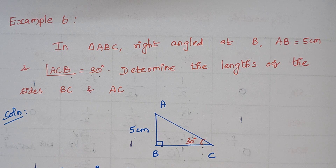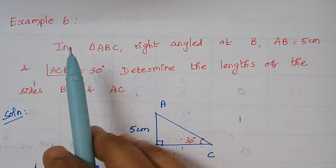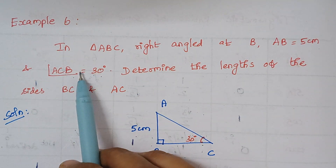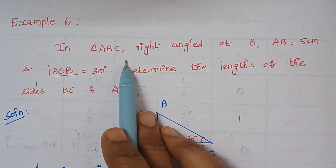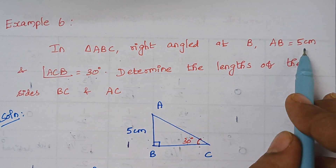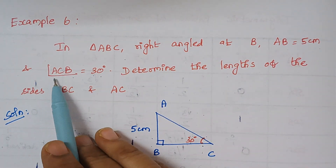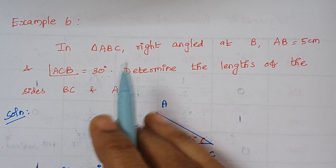Hello viewers, I am Kausalya. Today we are going to solve examples 6, 7 and 8 in chapter trigonometric ratios. The sixth problem is: in triangle ABC, right angle at B, AB is 5 centimeters and angle ACB is 30 degrees.